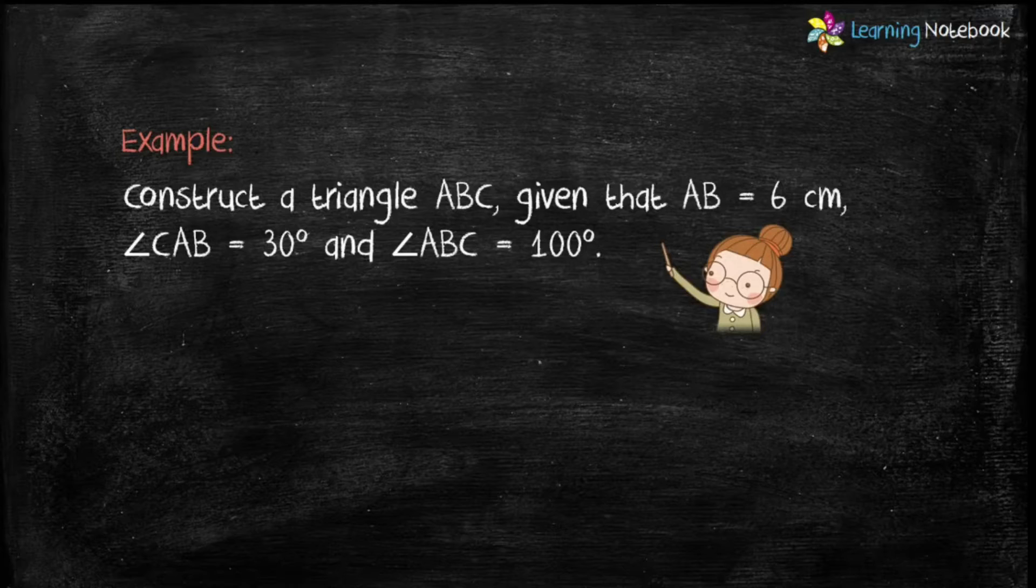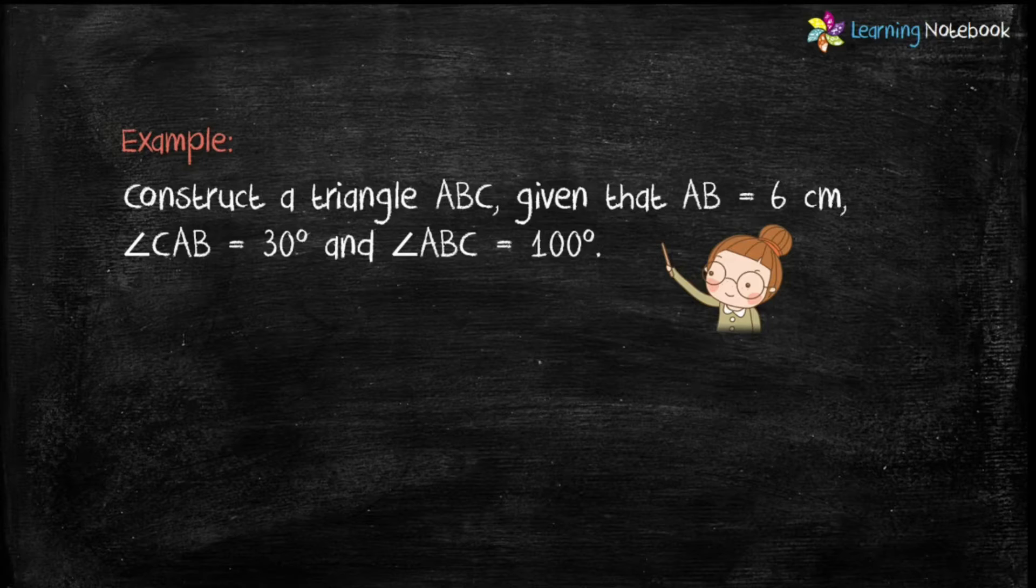Question is, construct a triangle ABC given that AB equals to 6 cm, angle CAB equals to 30 degree and angle ABC equals to 100 degree.